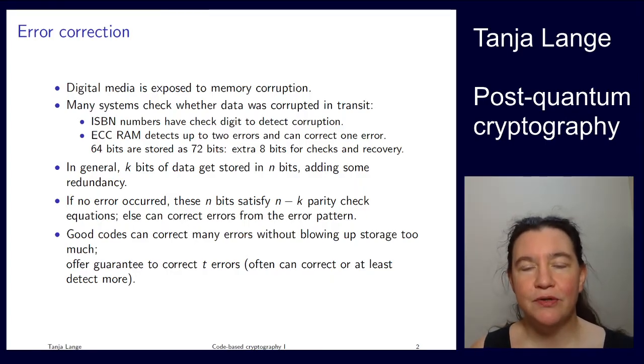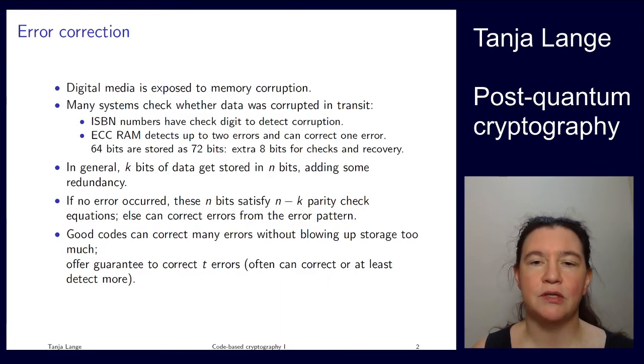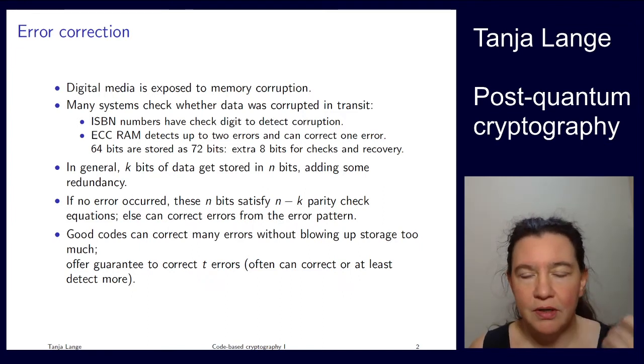We're now going to see our first example of a post-quantum crypto system, and in particular we're going to look into code-based cryptography. Codes here don't mean secret codes or codes as in implementation, but error-correcting codes. This dates from the 19th and 20th century when people were starting to transmit data and trying to figure out how to correct this.